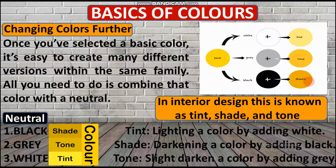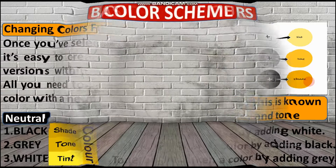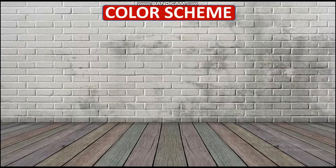We have discussed the basics and changing of colors. Next, I will tell you what a color scheme is. There are many schemes in color, and you need to know them. If you want to do color selection, you can select any scheme, and according to that scheme you can easily select and combine colors. There are six types of schemes.